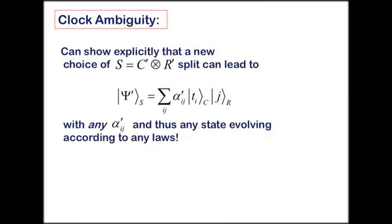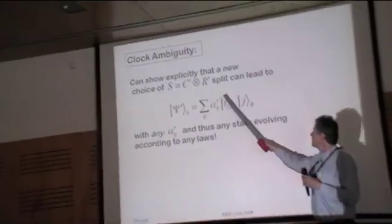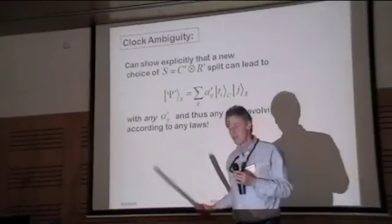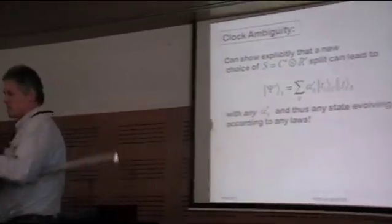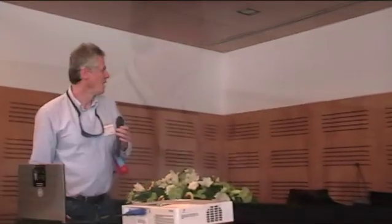And the clock ambiguity is that you can choose another choice of clock and rest split to get any expansion coefficients you want. If I had more than eight minutes, I'd show you how, it's very simple. So, that completely undermines.